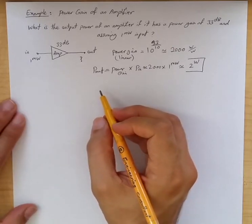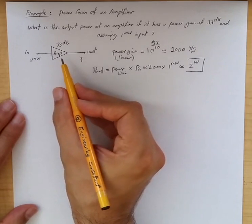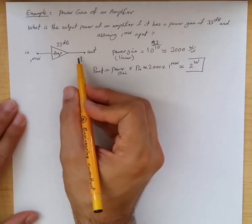Here's a simple example for illustrating power gain of an amplifier. An amplifier with a power gain of 33 dB is given. Input is 1 mW. The question is, what is the output power?